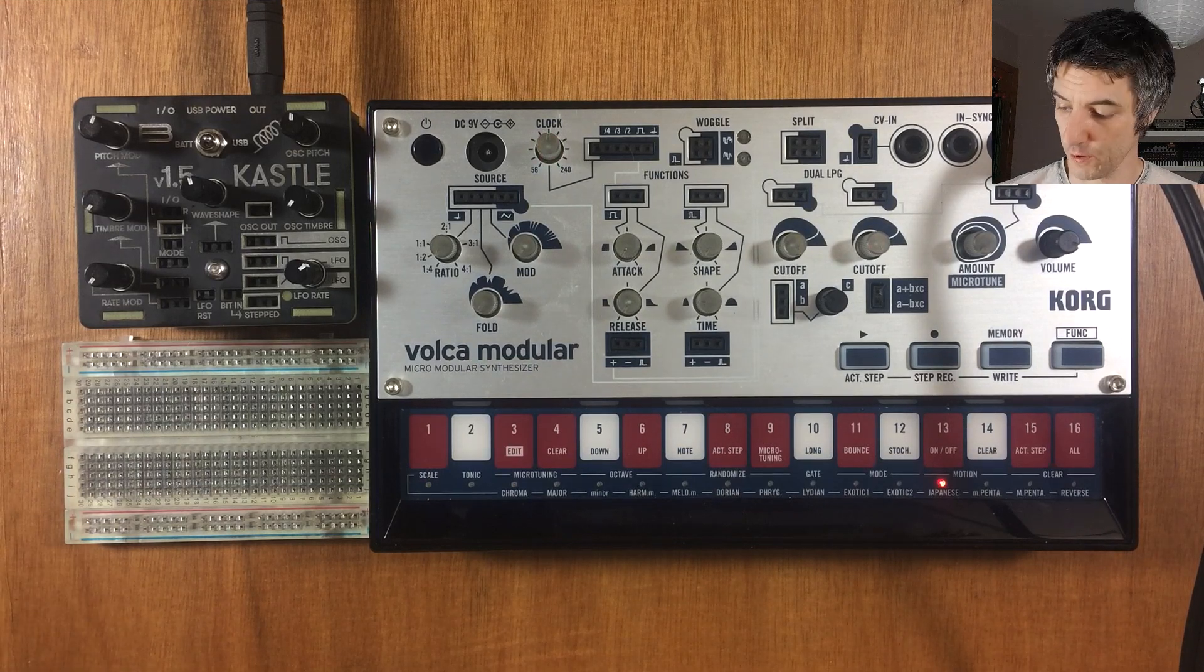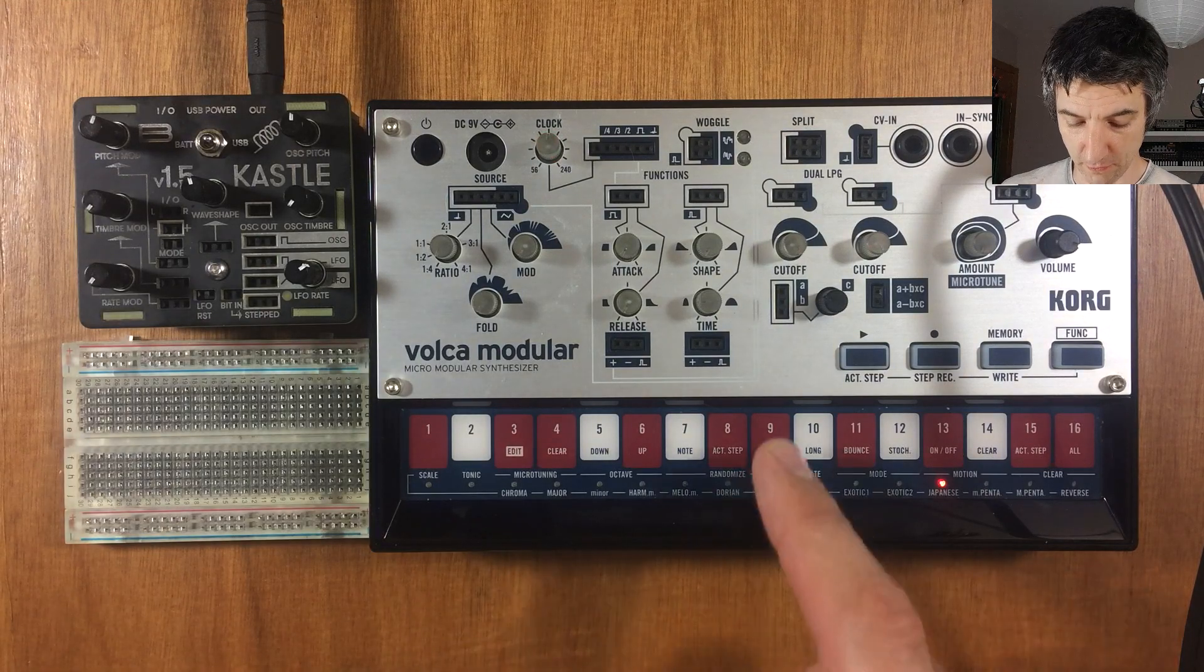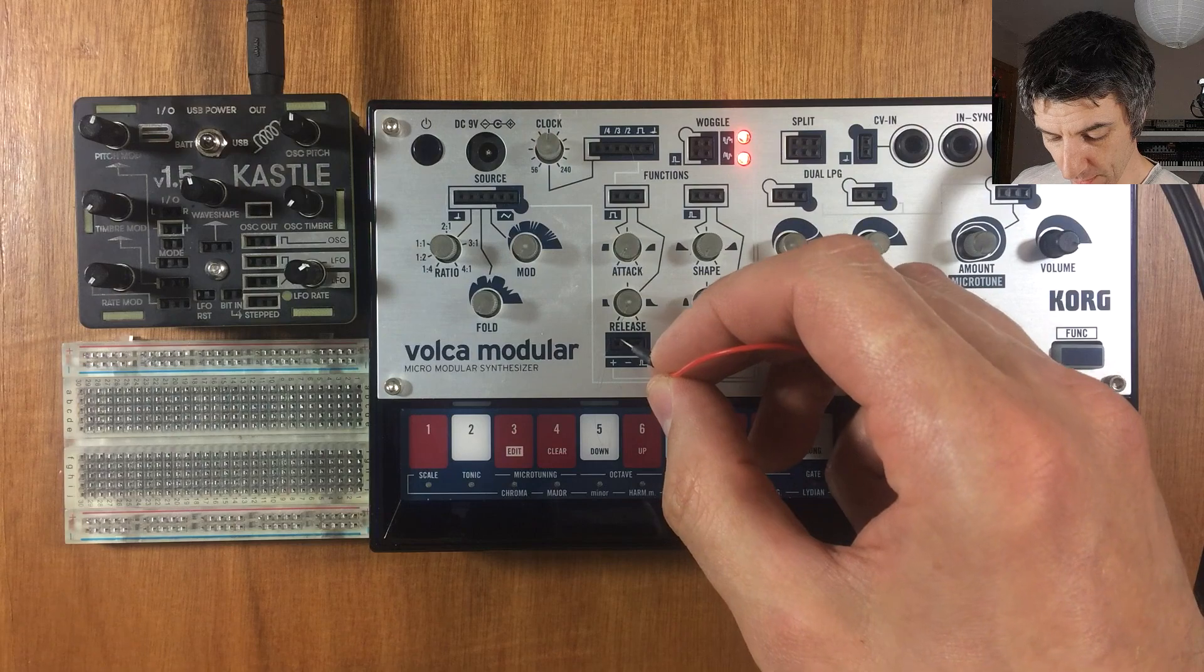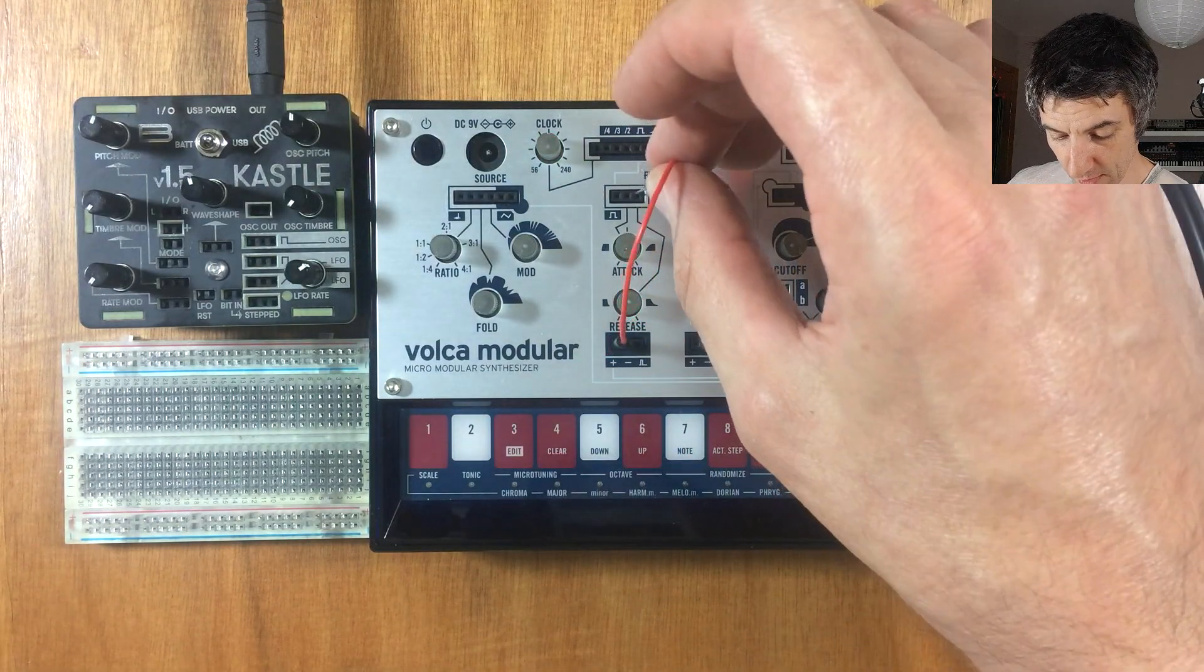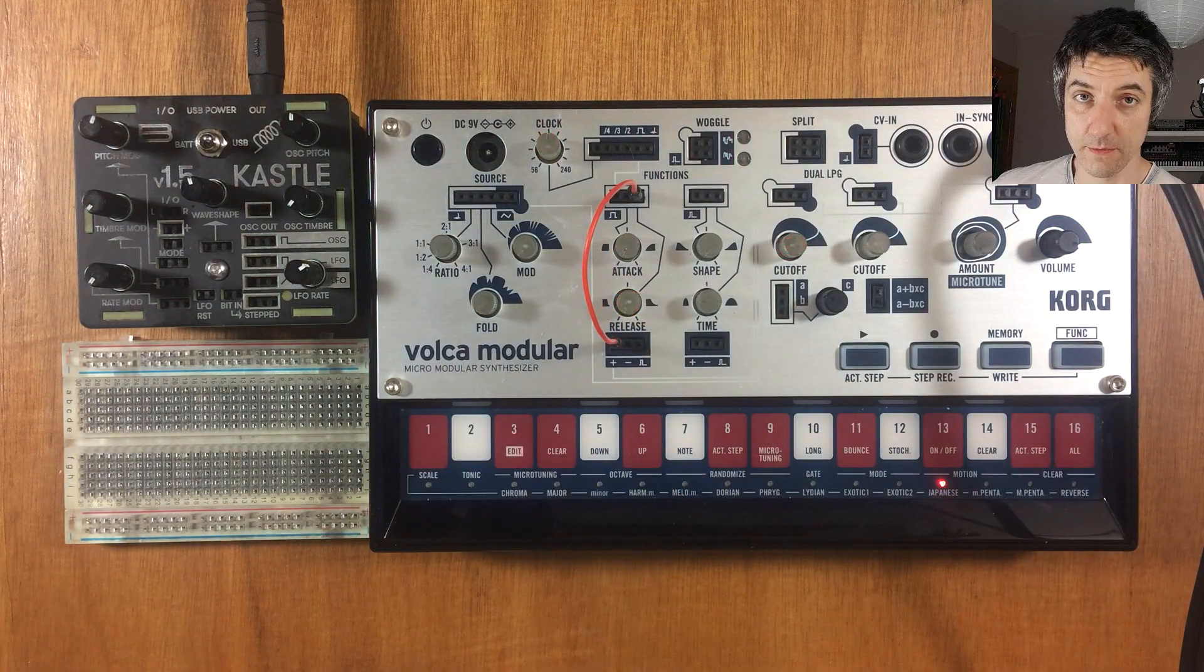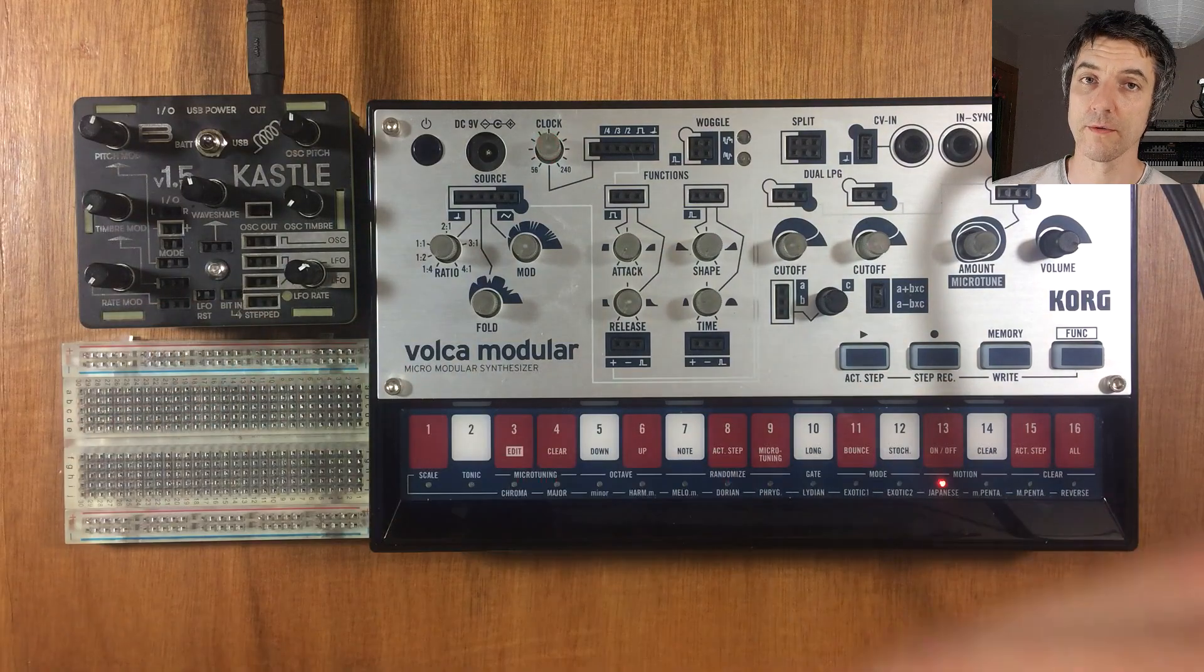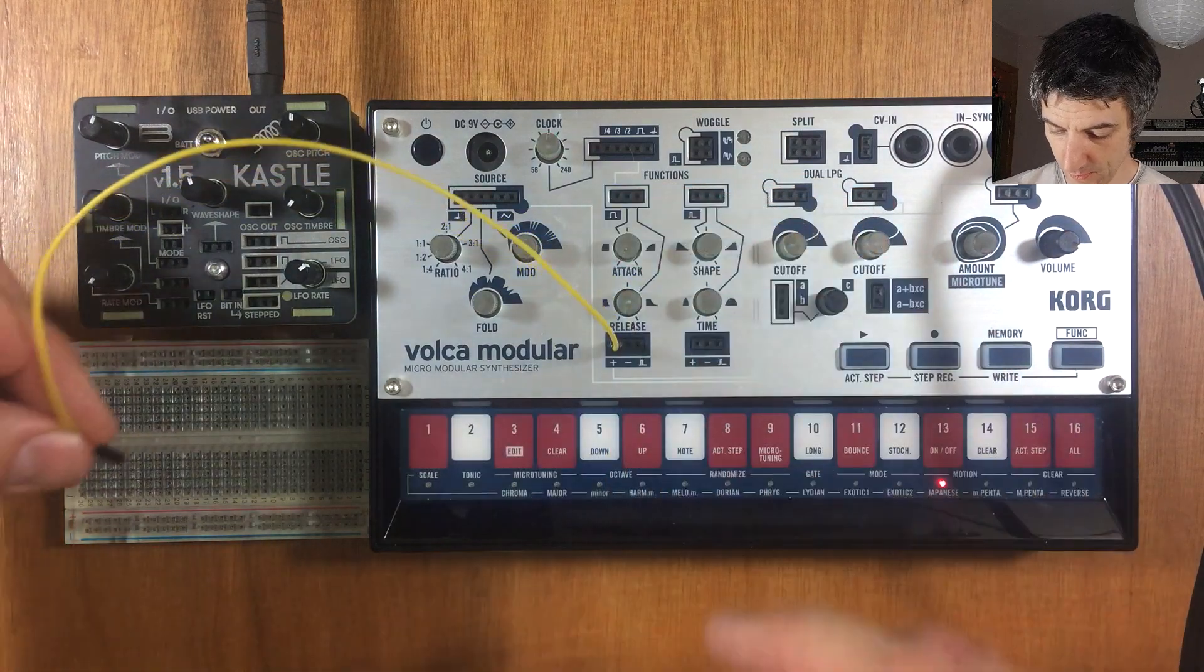So with that in mind, a nice easy thing to demonstrate is a switch. We've got a basic patch set up here on the Volca modular. If we were to take, for example, the plus output from the envelope here, or function generator I should call it, and run it back into the release, that is going to lengthen this envelope. What we can do is we can run our plus connection out of the Volca modular through a switch and back in again, and we can make a little sustain pedal.